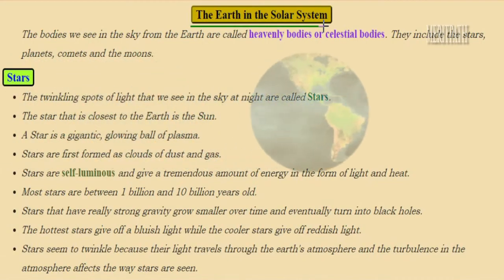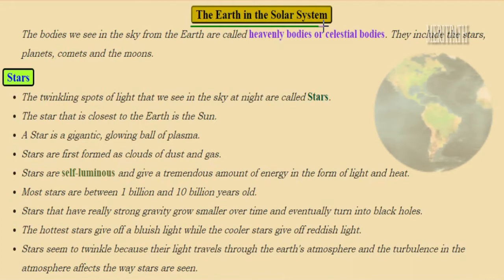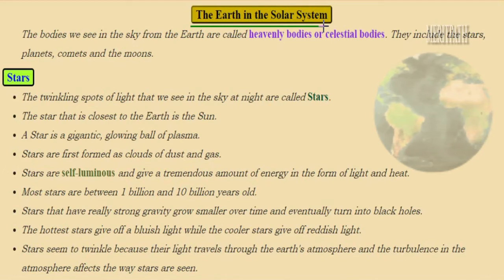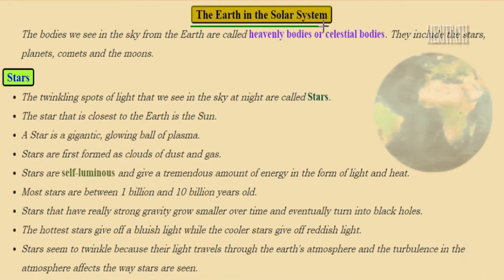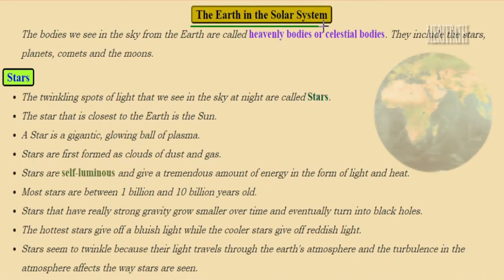Let's study about a new chapter called the Earth in the solar system. The solar system contains nine planets, and the Earth in which we live is one of the planets in the solar system. Earth is the only planet where life exists — no other planet has any life existing on it — because the Earth has air, water, and soil, which are the important components for life to exist.